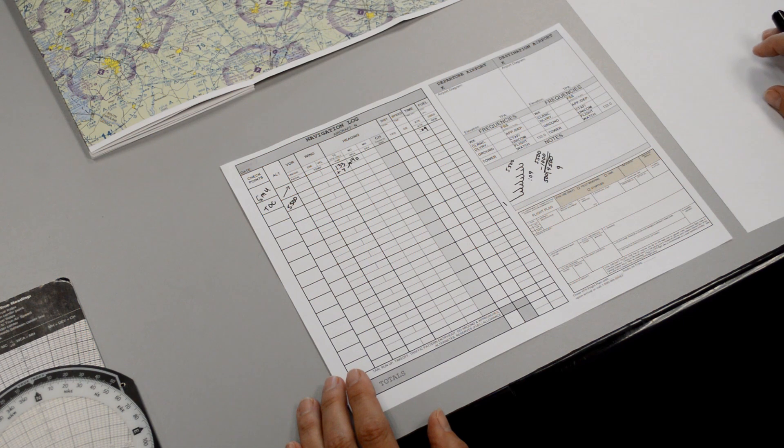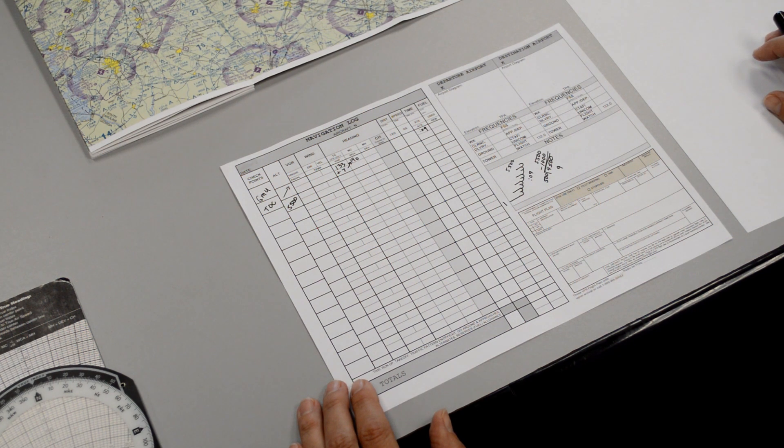Number 10 on our cross-country planning instructs us to calculate our true airspeed for both the climb and the cruise, and find our gallons per hour off the performance charts.